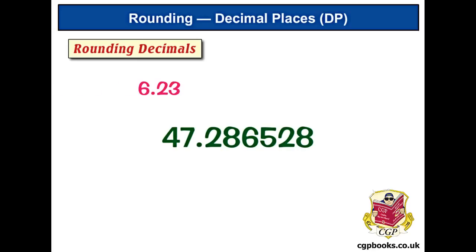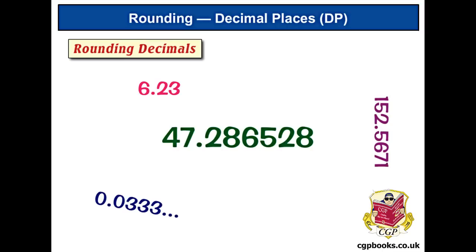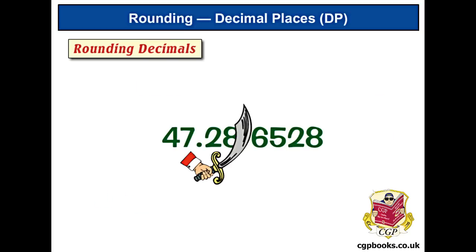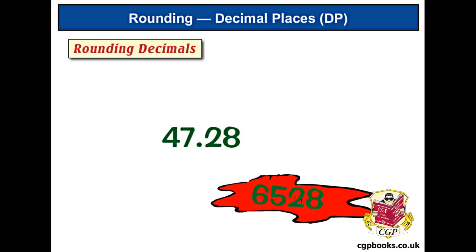Decimals, like these, can be rounded to a smaller number of decimal places, which means getting rid of some of the digits after the decimal point. But you can't just chop them off without thinking about it. I'm afraid there are rules to follow, but do that and you'll get it right every time.